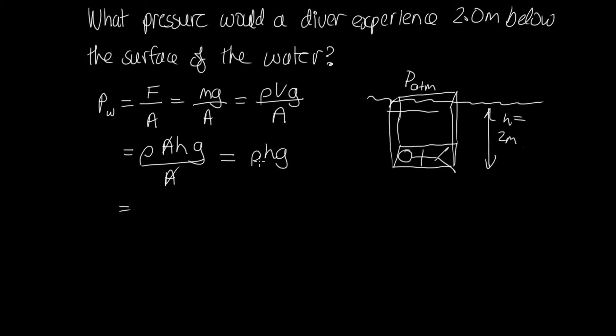So we can now evaluate this. Water has a density of a thousand kilograms per meter cubed. So one liter of water weighs one kilogram, and in a cubic meter of water there is a thousand liters. So this is equal to a thousand times the height which we've said is two meters times g which is 9.8. And solving that we end up with 19,600 pascals.